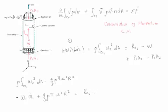Plus 4 thirds rho pi W1 squared R squared is equal to the reaction force in the z axis minus the weight. The area is the same so it will be A1 and then it will be P1 minus P2.